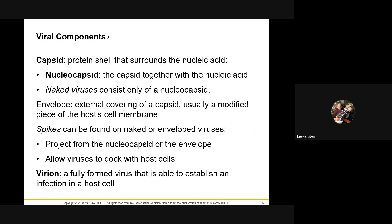DNA viruses have a tendency more than any other type to become latent — meaning once you have it, it will trouble you forever. Latency is a key problem with them. RNA viruses mutate the most. COVID is in the RNA virus family — how many days go by without a new variant? That gives you the idea. For our purposes, DNA versus RNA is the first major classification characteristic.